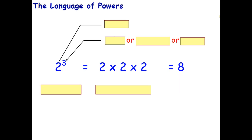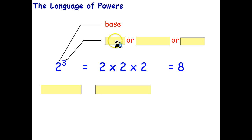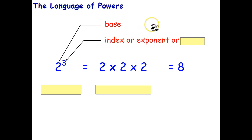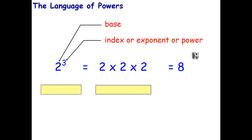The language of powers: here we have a 2 with a little 3 above it. That 2 is called the base. The 3 actually has 3 different names depending on which part of the world you're from. One name is the index, another is the exponent — index tends to be British and Australian, exponent tends to be the American term — and sometimes it's also called the power. That's a little confusing because often we use the whole thing to stand for the power, so 2 to the index 3 is sometimes called the power, but sometimes just the little number itself is called the power, so our terminology can be a little ambiguous.